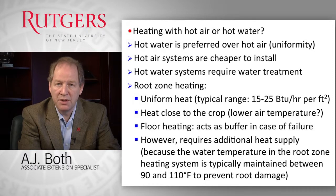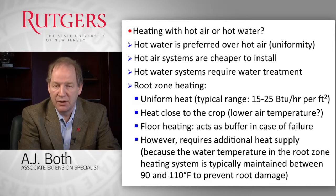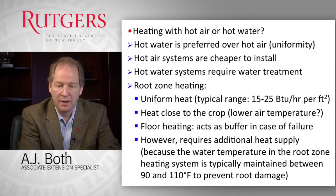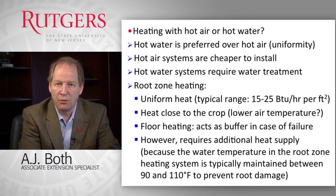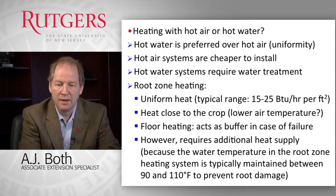The root zone heating system provides heat directly where it is needed, and as a result we may be able to reduce the overall air temperature inside the greenhouse, which may save energy. However, reducing air temperature could have a negative impact on plant growth and development. So if you want to try this strategy, I always recommend doing it on a small scale first to see if it works before implementing it in your entire greenhouse operation.